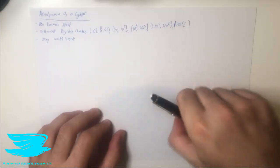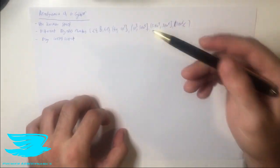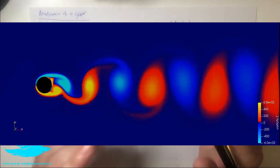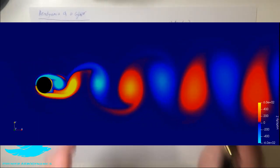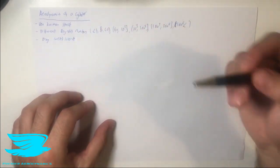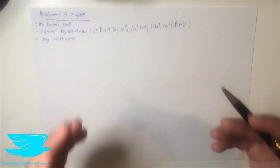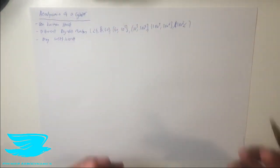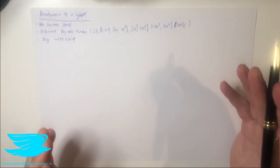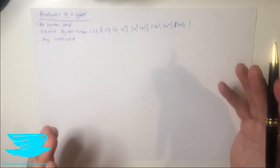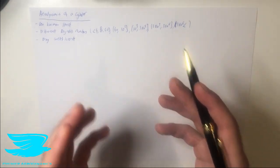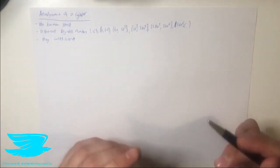What is up amigos? Today we're doing the aerodynamics of a cylinder. This is a video showing a simulation of a cylinder. We can see something called a von Kármán street here, and we'll go through what a von Kármán street is, the different Reynolds numbers, and the drag coefficient of a cylinder. This is actually quite an interesting topic — it's one of the most difficult topics in aerodynamics at the moment, because despite being so simple it's deceptively complex with a lot of research on it.